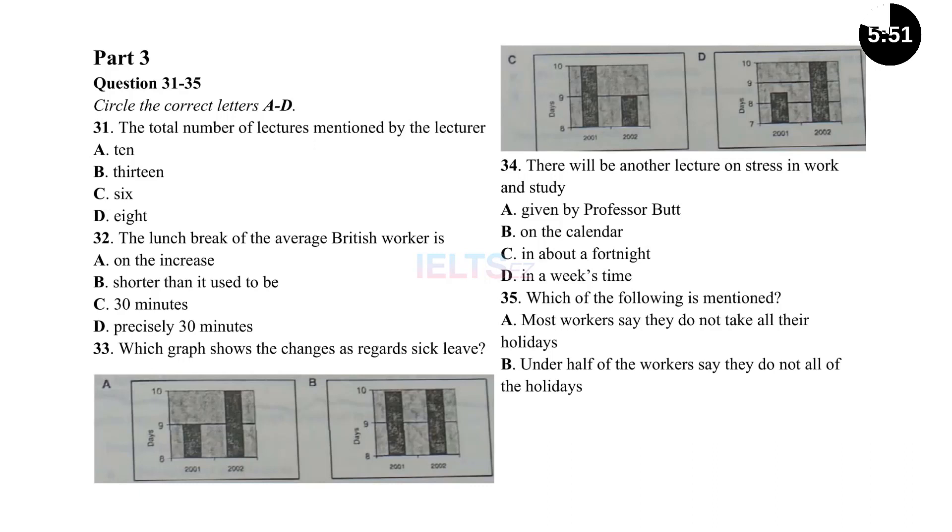You are going to hear a lecture on life at work, which is being given as part of a series of lectures on productivity and work practices. First, look at questions 31 to 35. As you can see, there are four alternative answers, A, B, C and D, for each question. Decide which alternative is the most suitable answer and circle the correct letter.